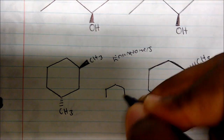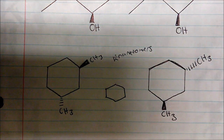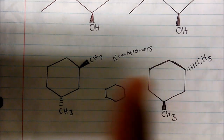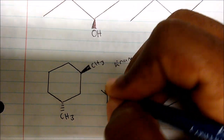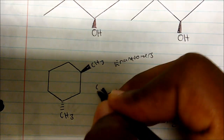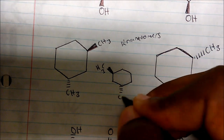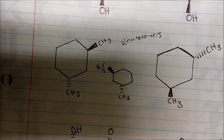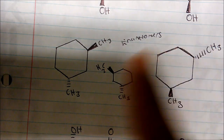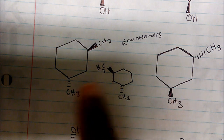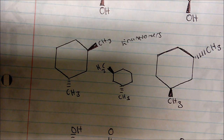Remember, there are two ways of drawing an enantiomer. Another enantiomer of this compound would be to flip the molecule and keep my chiral centers the same. So if I flip it sideways, my CH3 still has to be coming out at me — my chiral centers do not change. When I flip it, my CH3 is on this end and my chiral center does not change. So these two are enantiomers. That's another enantiomer of the molecule.